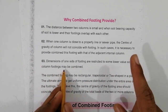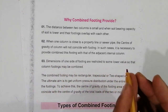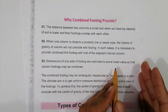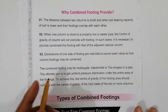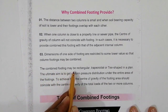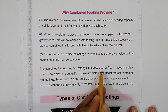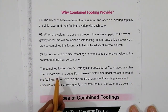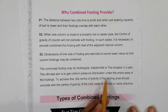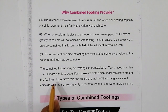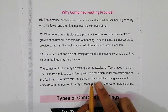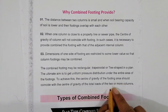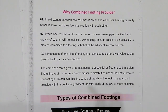The third reason: when the dimensions of one side of the footing are restricted to some lower value, column footings may be combined. The combined footing may be rectangular, trapezoidal, or T-shaped in plan. The ultimate aim is to get uniform pressure distribution under the entire footing area, so the center of gravity of the footing area should coincide with the center of gravity of the total load of two or more columns.